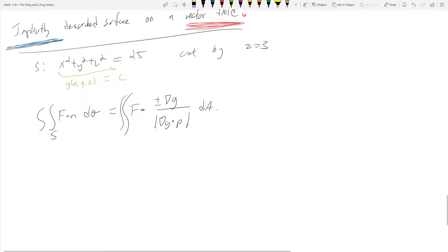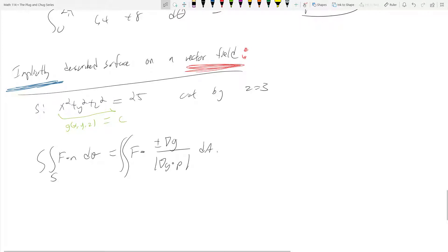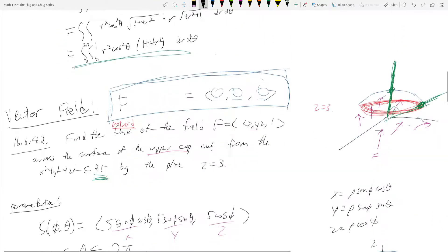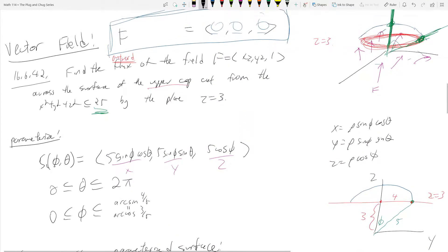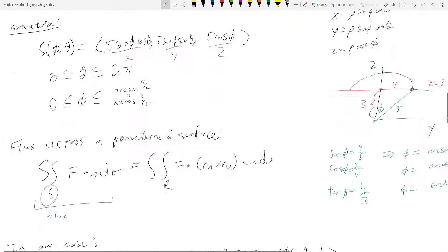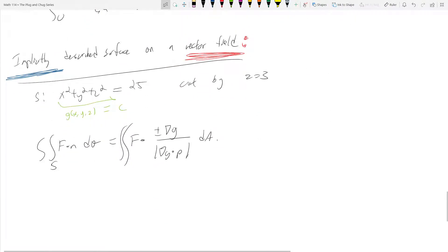So when does this work? Again, this only works when your surface is implicitly described. This is a function on one side, this is a constant on the other side. And this parameterization that we did up here, this will always work. So parameterization, provided that you parameterize correctly, will always work. And then this guy down here might not always work. It'll only work when you have an implicitly described surface.